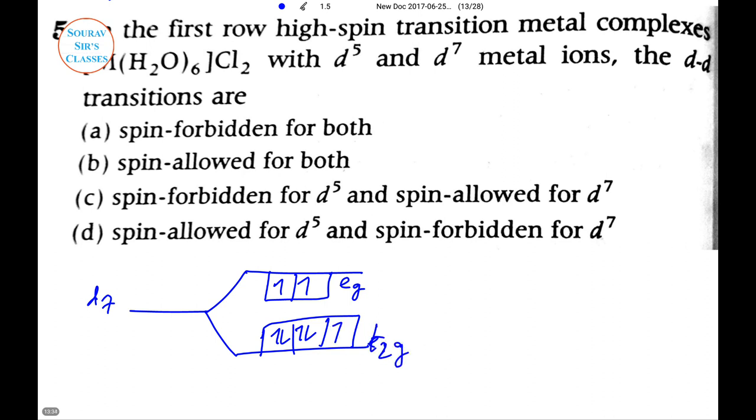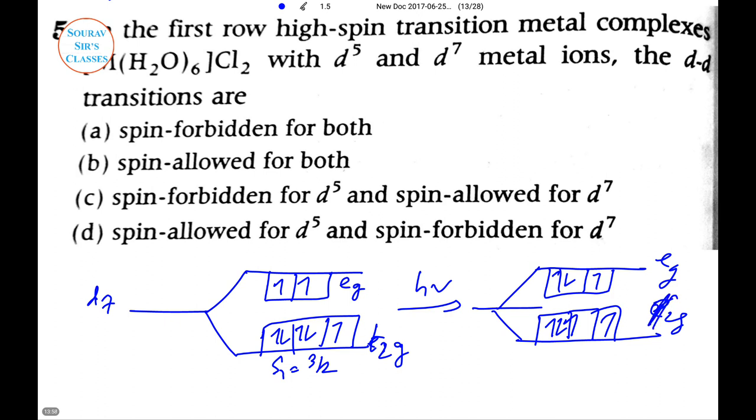Again with hν excitation, this formation gets us to a double-sided structure and a single-sided with eg and t2g almost the same pattern. So here ΔS is actually S1 minus S2. Both are actually we are getting 3/2, so the delta S is 0. So this one's spin is allowed. Hence option C is the correct answer - where d5 is forbidden and d7 is allowed.